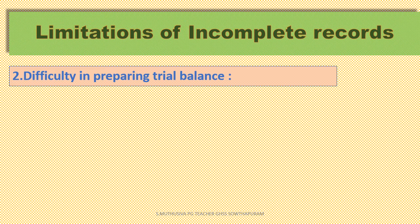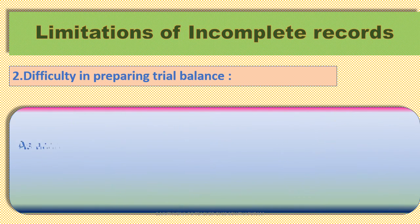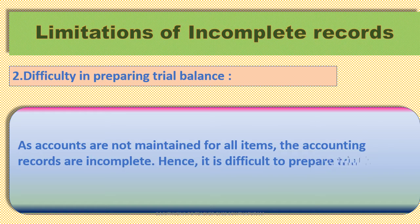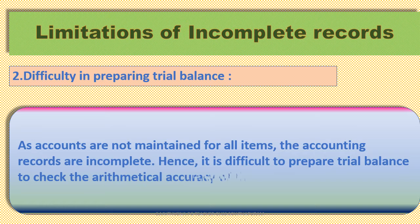Second limitation — Difficulty in Preparing Trial Balance. As accounts are not maintained for all items, the accounting records are incomplete. Hence, it is difficult to prepare a trial balance to check the arithmetic accuracy of the accounts.